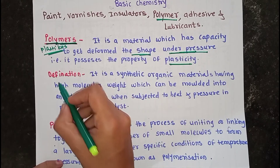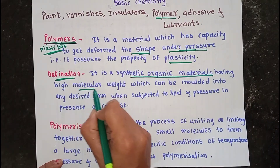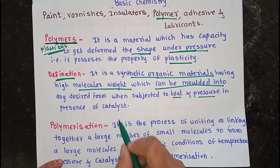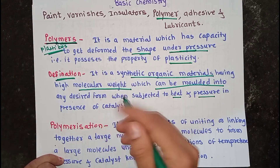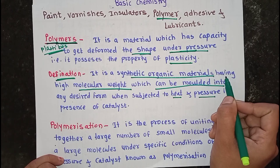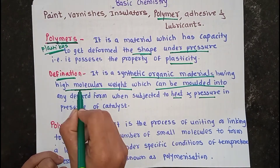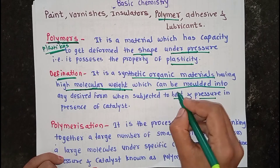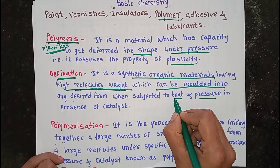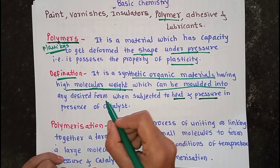The proper definition of a polymer is: it is a synthetic organic material having high molecular weight, which can be molded into any desired form when subjected to heat and pressure in the presence of a catalyst. When you apply heat and pressure, the polymer is produced in the desired shape and size.